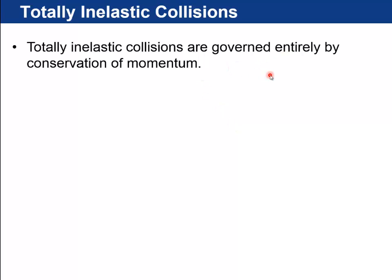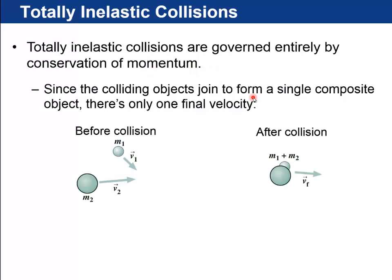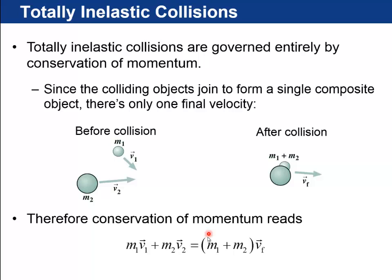So totally inelastic collisions, you can just use conservation of momentum to figure them out. Before the collision, you've got m1 at velocity v1, m2 at velocity v2, and after the collision, they're stuck together. One object with m1 plus m2, and that has the final velocity, which you can find from these initials. The conservation of momentum equation reads m1 v1 plus m2 v2 equals the total mass times v final. You can solve for the components of v final.